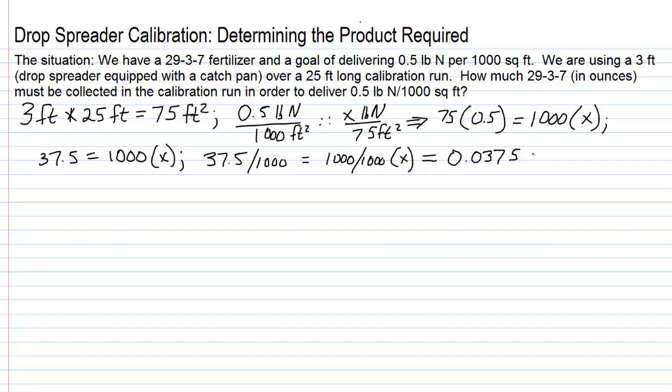And x, remember, is in pounds of nitrogen. So, that's what we would collect over 75 square feet is 0.0375 pounds of nitrogen.